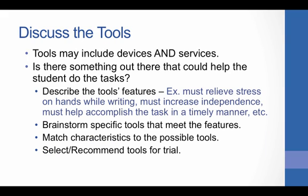We have now arrived at our discussion of tools. As mentioned in the beginning, AT tools may include devices and services. We want to answer the question: is there something out there that could help the student do the tasks? We want to start by describing the tool's features that will be needed — for example, the tool must relieve stress on hands while writing, must increase independence, must help accomplish the task in a timely manner, etc. The team should brainstorm specific tools that either by themselves or in combination have all of the features the student needs. This is accomplished by matching characteristics to the possible tools. Once this is finished, the team will select and/or recommend tools for the student to trial.